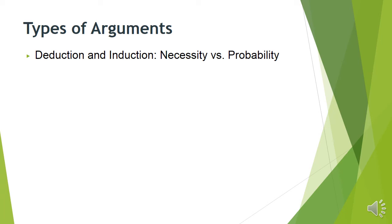Now we can describe a distinction between different kinds of arguments, and it's going to largely rely on the distinction of support. We're going to talk about deductive and inductive arguments. This is largely a distinction between whether the premises give the conclusion with necessity or if the premises give the conclusion with probability — does it make the conclusion certain or does it make it likely? One fully supports; the other one partially or mostly supports.